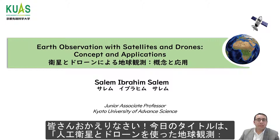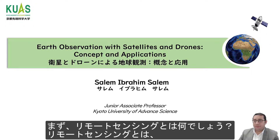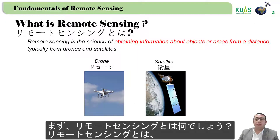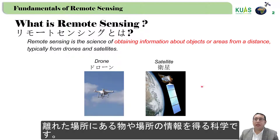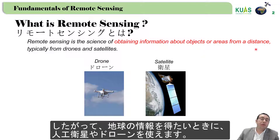Today my presentation title is Earth's Observation with Satellite and Drone: Concept and Application. The first question is: what is remote sensing? Remote sensing is a science of obtaining information about objects or an area from a distance. So if we need to collect information about the Earth without being in direct contact, we can use satellite and drone.